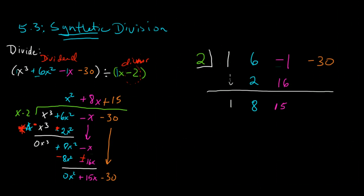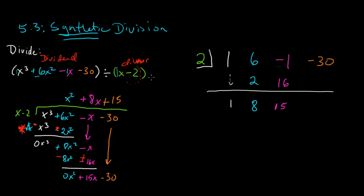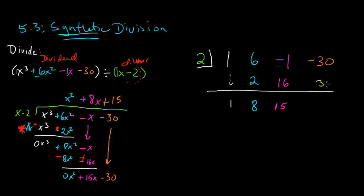And we will multiply 2 times a positive 15, and we'll get a positive 30. Positive 30. And negative 30 plus 30 is 0.